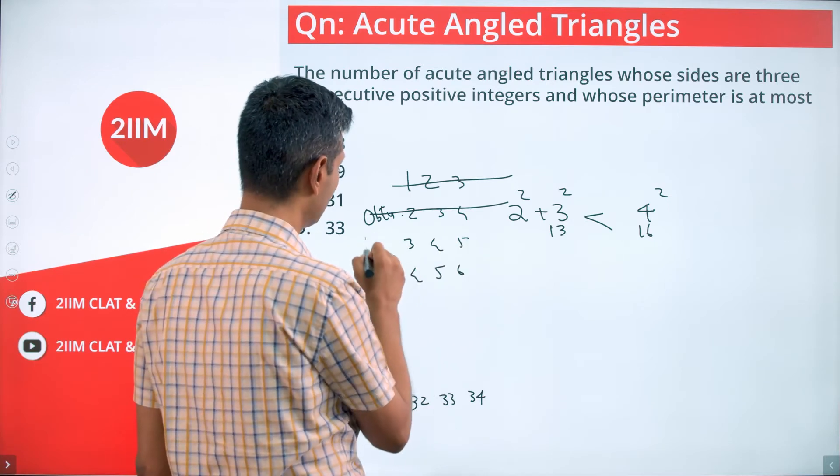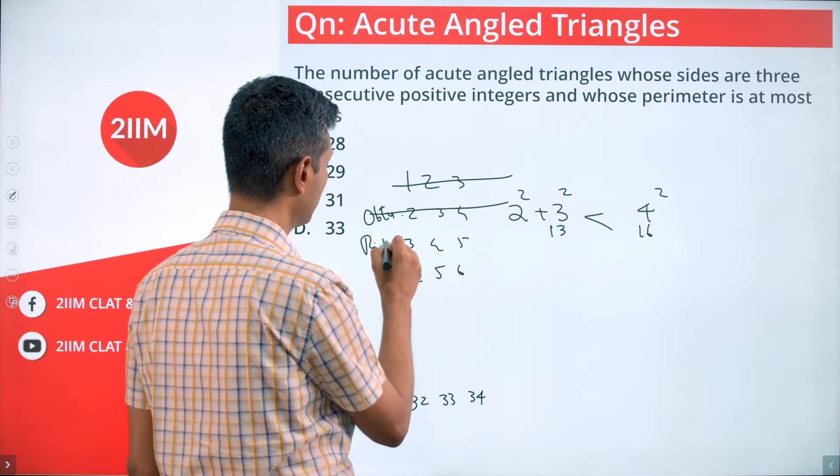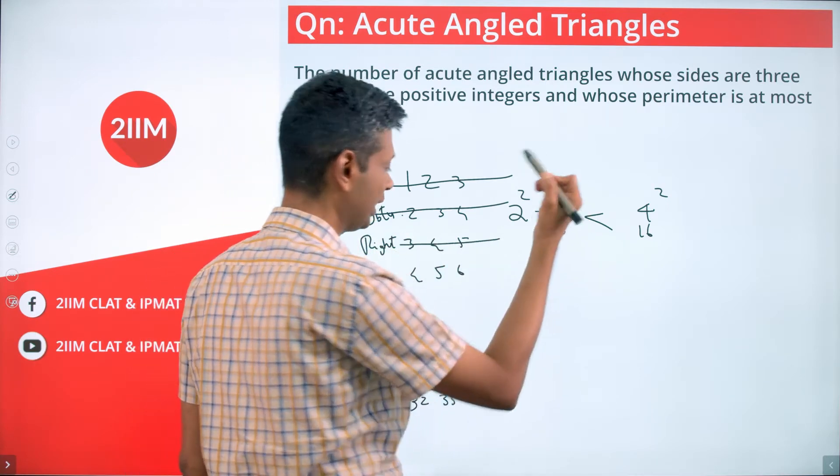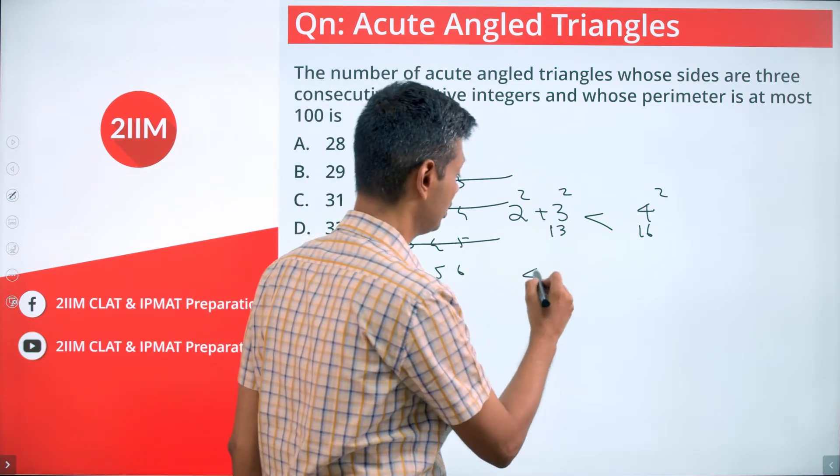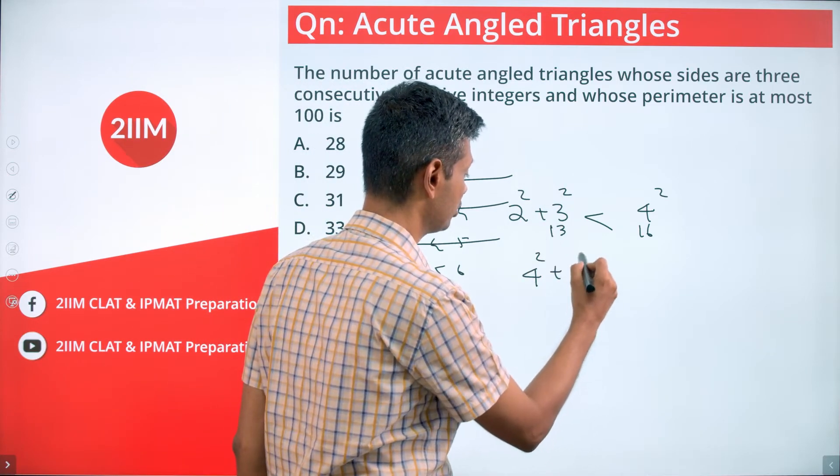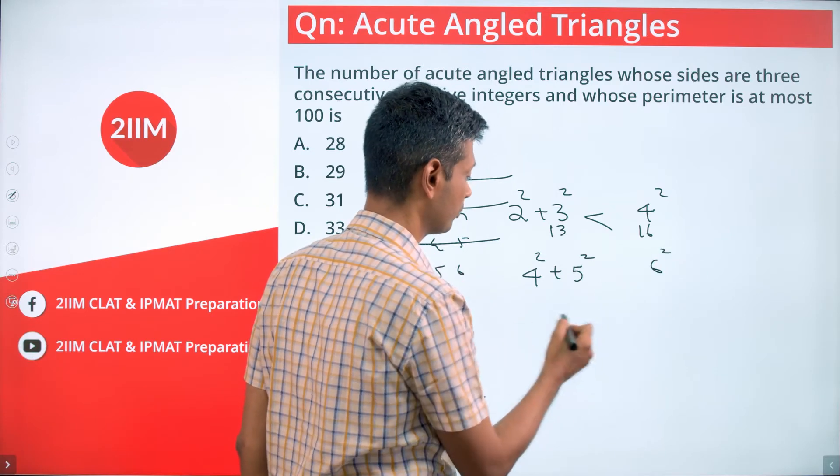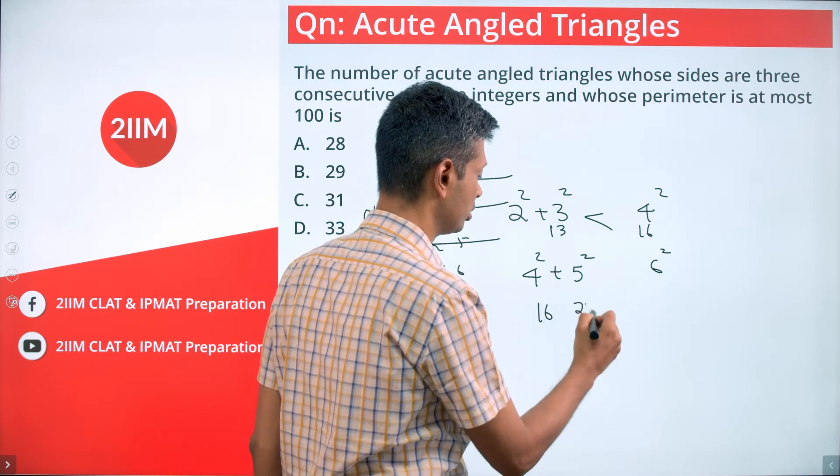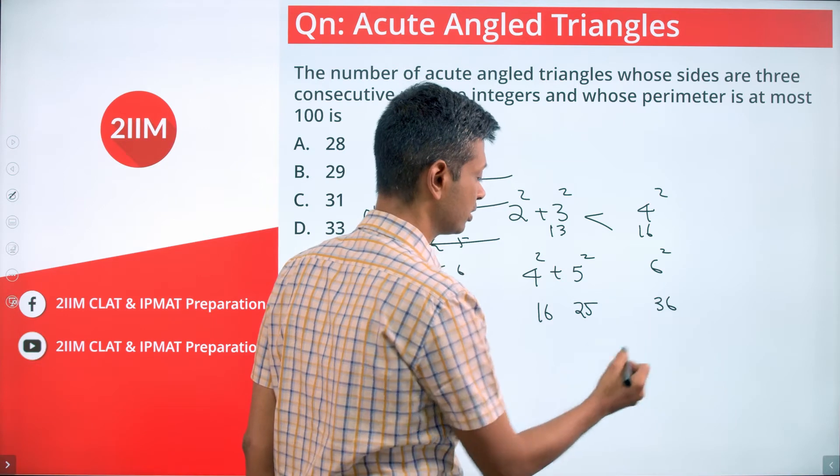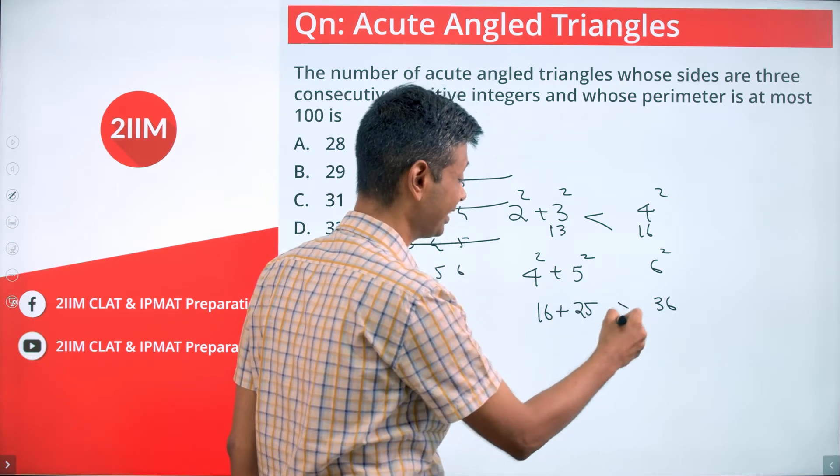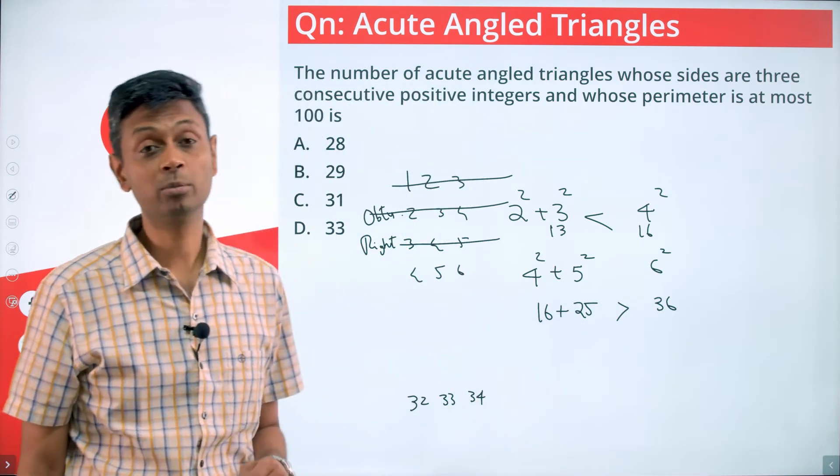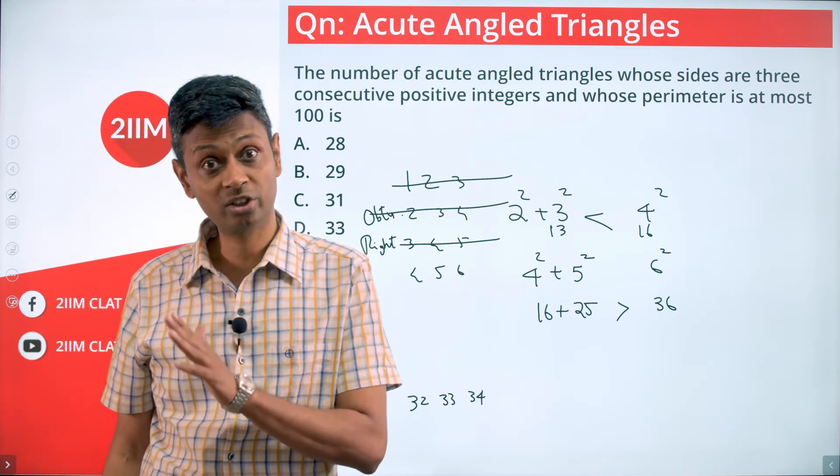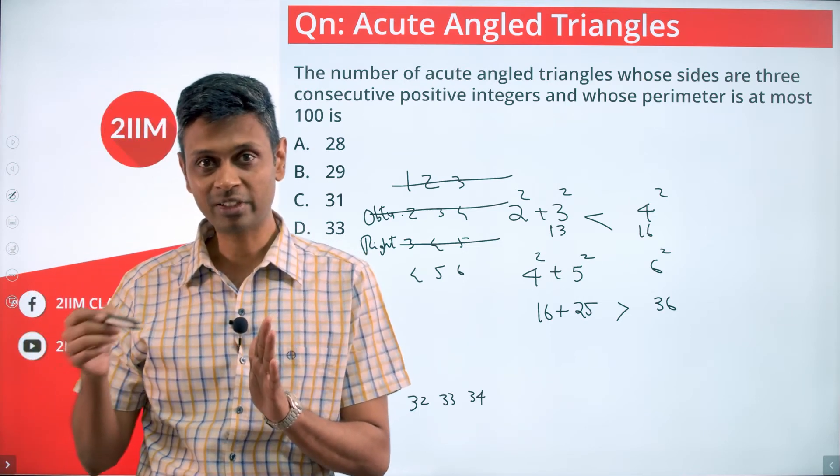4, 5, 6 - wonderful! 4² + 5² compared with 6²: 16, 25, 36. 16 + 25 is greater than 36. This will count. Think about it: 4² + 5² vs 6², then 5, 6, 7; 6, 7, 8; 7, 8, 9...